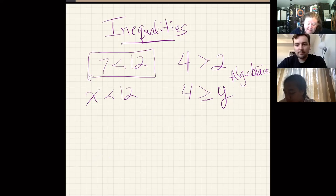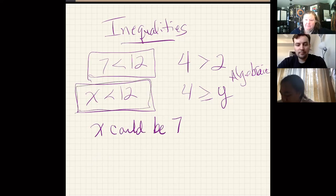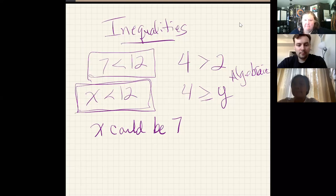So when we're dealing with algebraic inequalities, we're trying to find values that make them true. So when I look at this inequality, x is less than 12, the inequality up above it works. X could be 7. What are some other numbers that x could be in this inequality to make it true? Go ahead and add some to the chat.